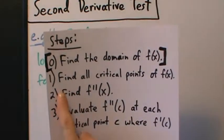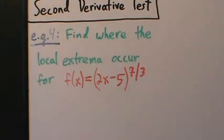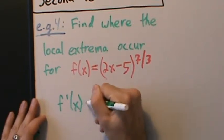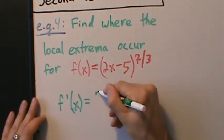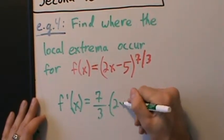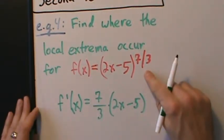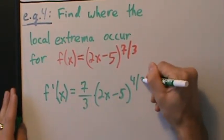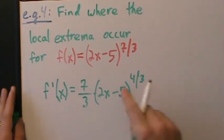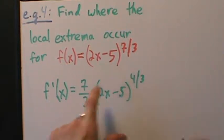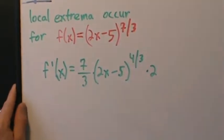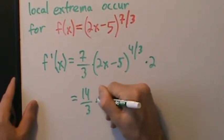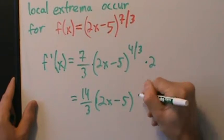Step 1: find all the critical points of f(x). So if f(x) = (2x - 5)^(7/3), then f'(x) — bring down the exponent using the power rule — is 7/3 times (2x - 5). Then subtract 1 from the exponent: 7/3 minus 1 equals 7/3 minus 3/3, which is 4/3. The chain rule says multiply by the derivative of what's on the inside, which is the derivative of 2x - 5, which is 2. So we simplify to get f'(x) = (14/3)(2x - 5)^(4/3).